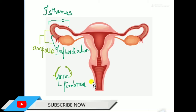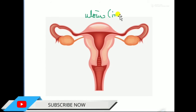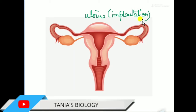The fallopian tube opens into a muscular, inverted structure known as the uterus. The uterus is very important — another name for the uterus is the womb. The uterus is the place of implantation; implantation takes place in the uterus. The fallopian tube conducts the ovum to the uterus or womb, which is the place of implantation.